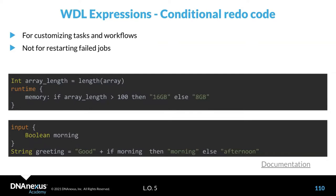This is dynamic resource allocation — using expressions for customization of memory. Or for custom string creation: if 'morning' is true the string is 'good morning', but if 'morning' is false it will use 'afternoon'. We've put as many documentation links as possible in the slides so you can use our presentation as reference material with direct links to the specific parts of the WDL specification.